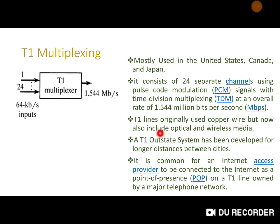T1 multiplexing originated with copper transmission, and now people are using it with optical and wireless communication as well. T1 is designed for long-distance communication like city-to-city links, and it is common for internet service providers to connect to the internet as a point of presence (POP). T1 lines are largely owned by telephone networks, and in India, BSNL also uses T1 multiplexing with 24 channels at 64 kbps each, resulting in 1.544 Mbps.